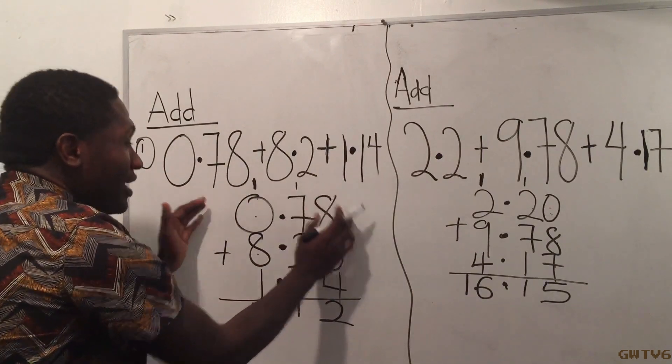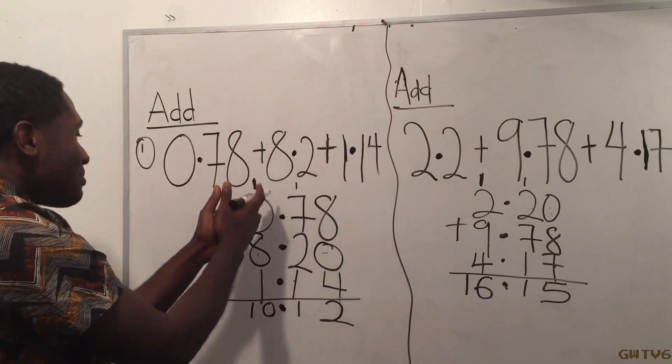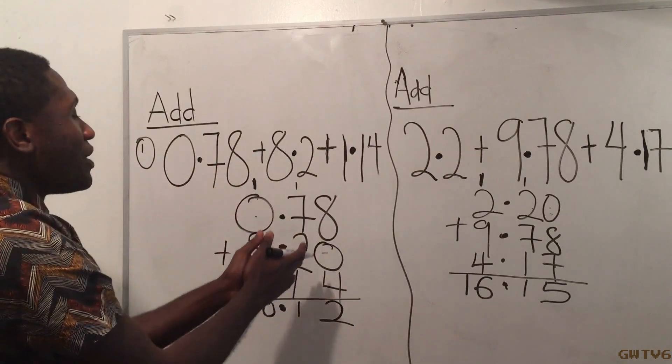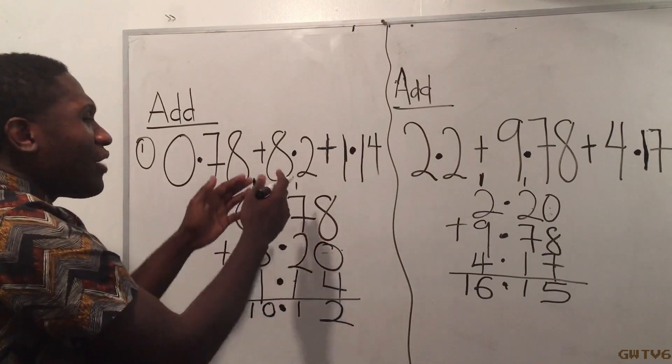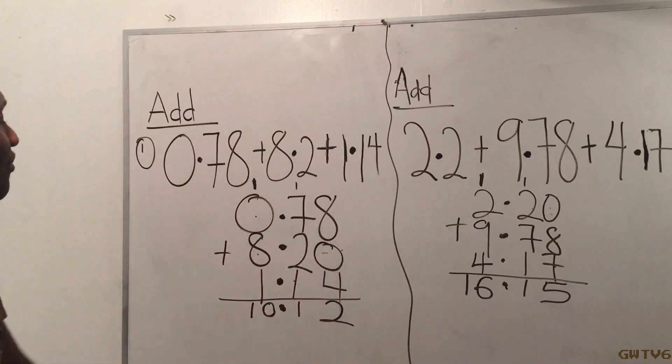Okay, so basically anytime I'm asked to add decimals and it's not in this form, I have to put it in that form. Make sure the decimals are in line, make sure where I'm missing a number I put zero, and then I'll just add like I'd add for whole numbers. That wasn't bad.